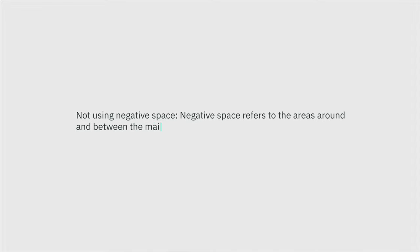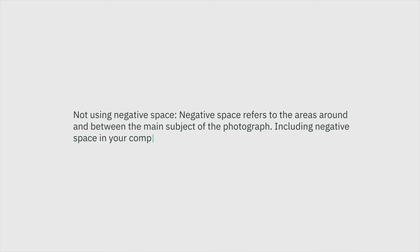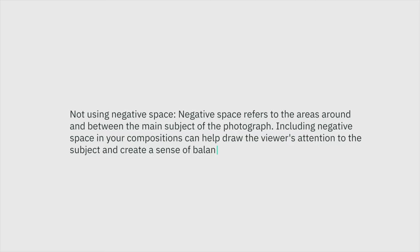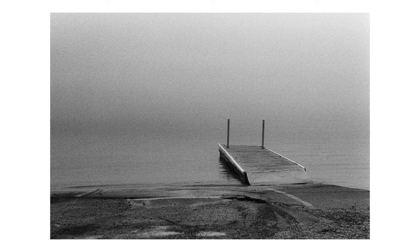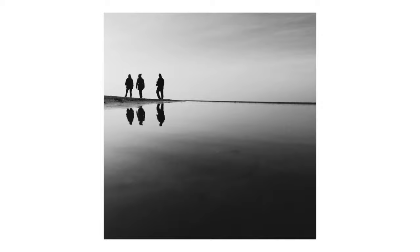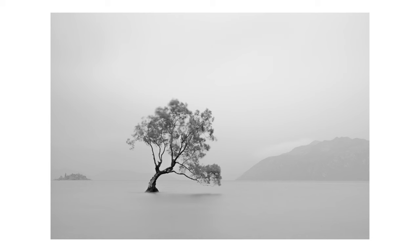Mistake number eight: not using negative space. Negative space refers to the areas around and between the main subject of a photograph. Including it in your compositions can draw the viewer's attention to the subject and create a sense of balance and simplicity. Street photographers use this a whole bunch — it's a fascinating way to tell a story. Ask yourself: does everything need to be in the photo, or could reframing to include some negative space make it more interesting? This improves through practice.